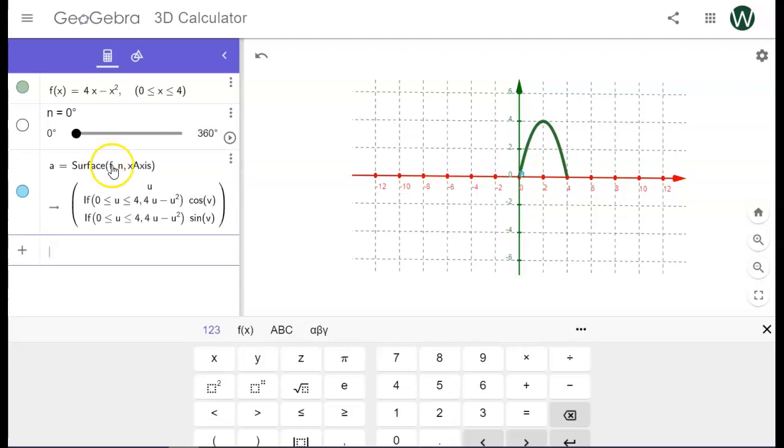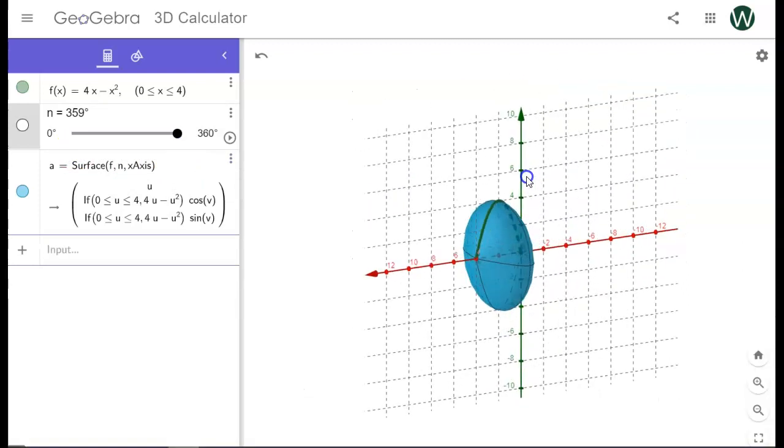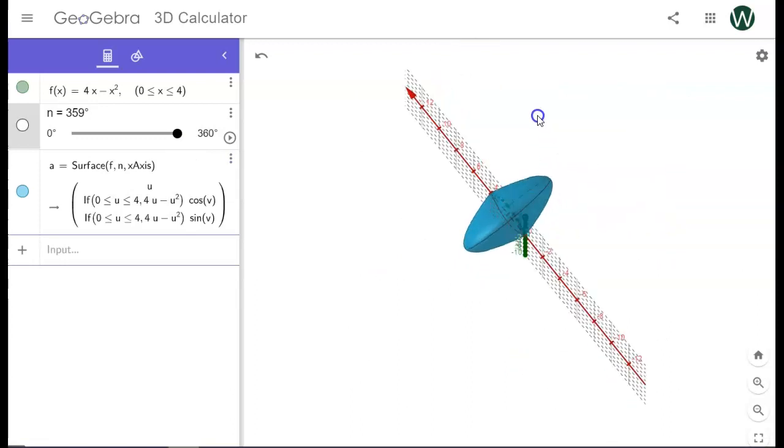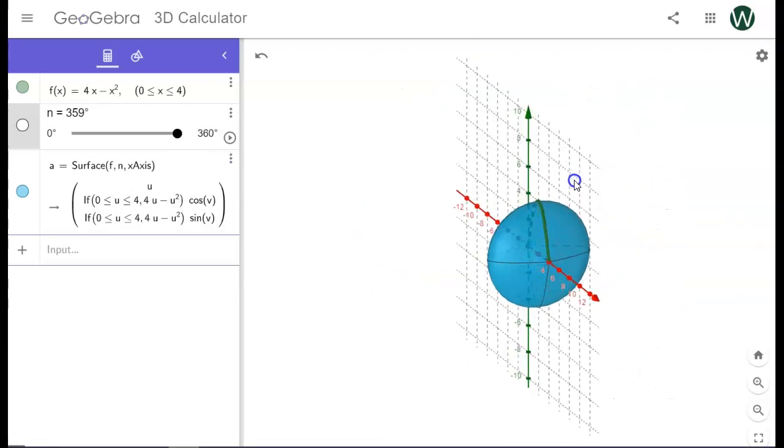And now we're ready to go. So I'm going to watch what happens over on the graphing window as I move the slider. Look at that. That is so cool. Now I can open it. I can slide it around to 360. And then I can go in here with my mouse. I can drag it. I can look at it from any perspective I want.